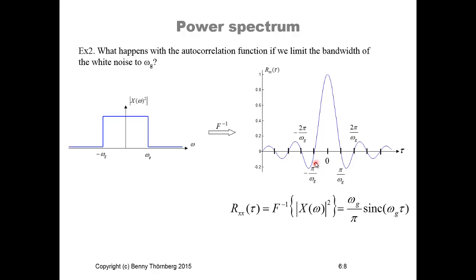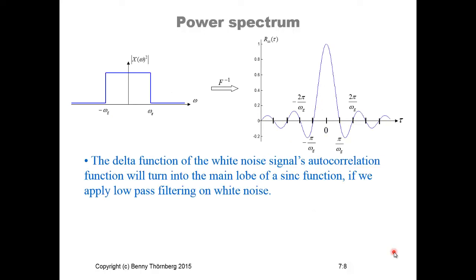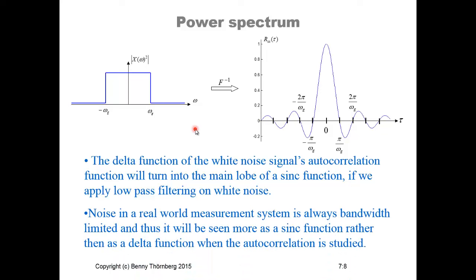The sinc function has a main lobe and its amplitude decreases as we approach infinity or minus infinity. The sinc function is defined as sin(a) / a. The delta function of white noise's autocorrelation will turn into the main lobe of a sinc function if we apply low-pass filtering on white noise. This is the case for an ideal low-pass filter, and similarly for any other type of low-pass filter. Noise in real-world measurement systems is always bandwidth-limited, and thus its autocorrelation function will look more like a sinc function than a delta function.